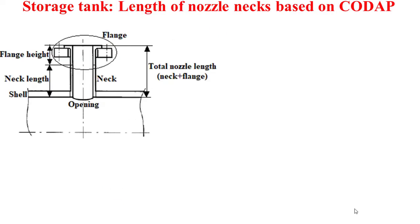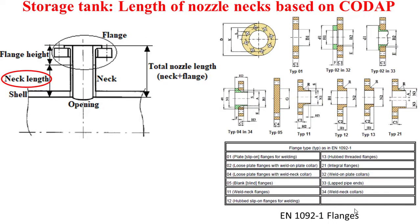For the length of the nozzle, as seen in the model, we have a shell with an opening on which a nozzle is installed. The nozzle consists of a neck and a flange. We have the total nozzle length and the neck length. The neck length is the total nozzle length minus the flange height.